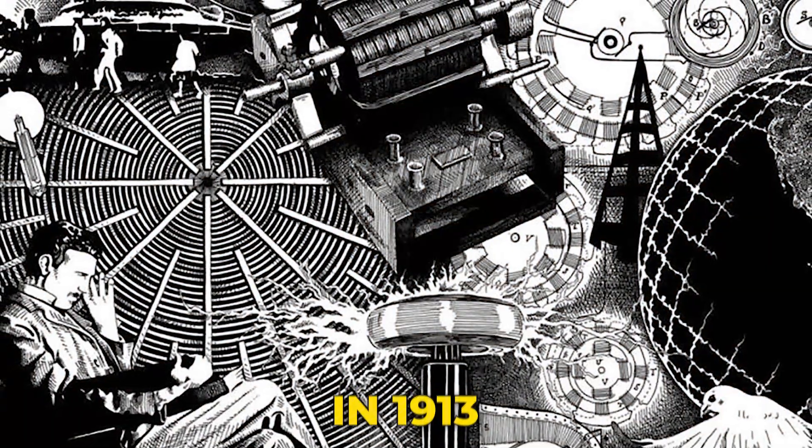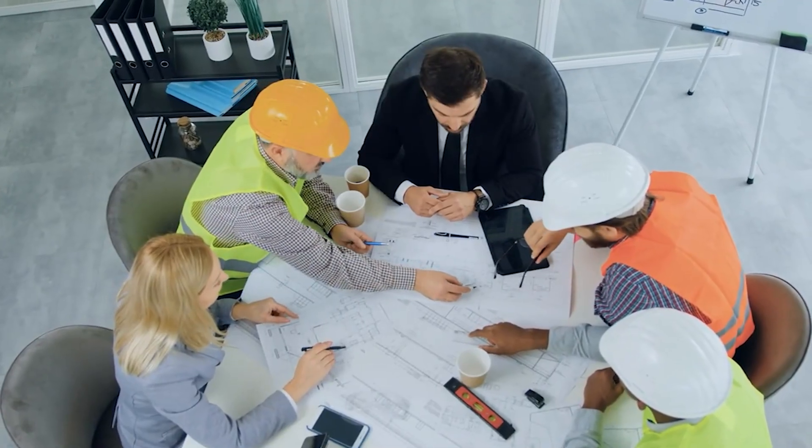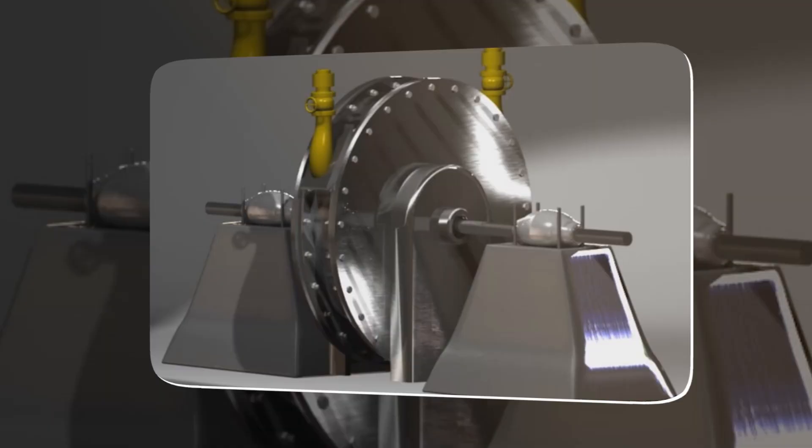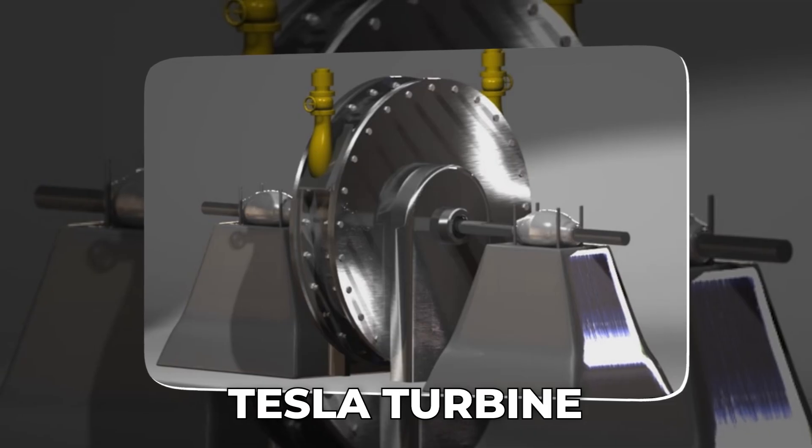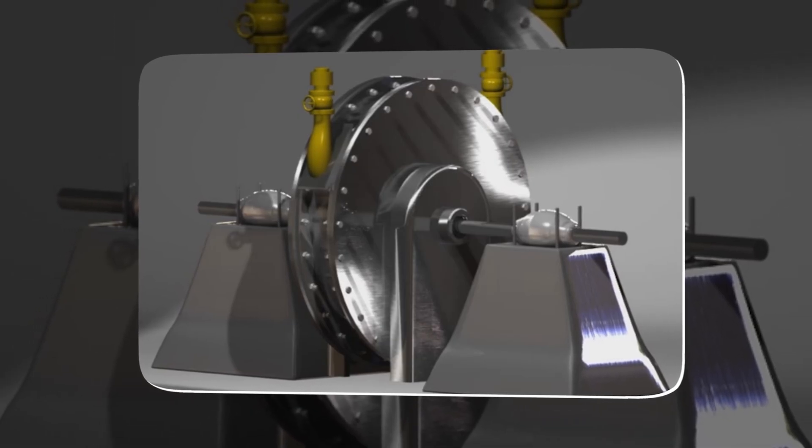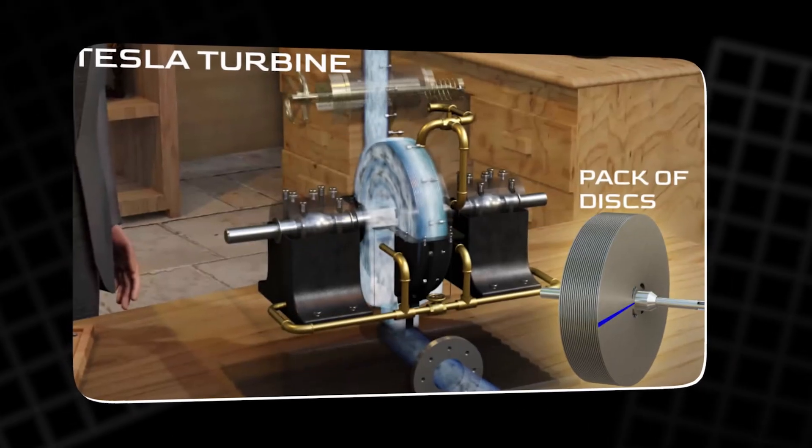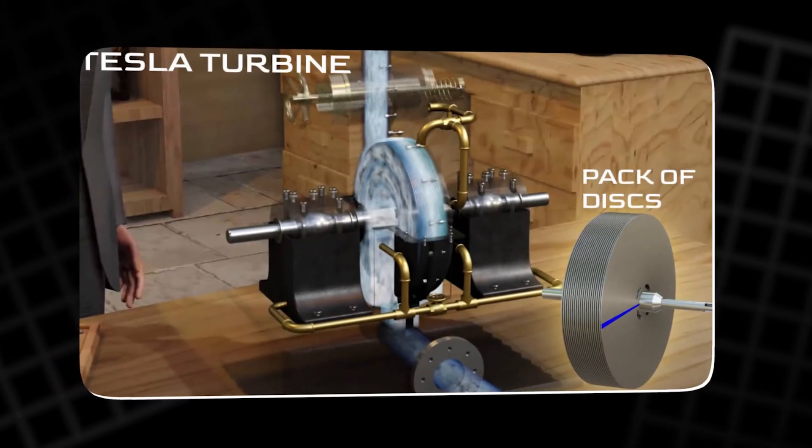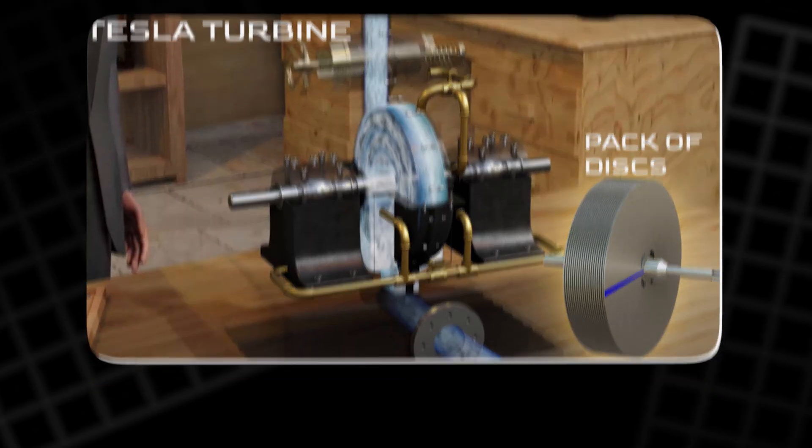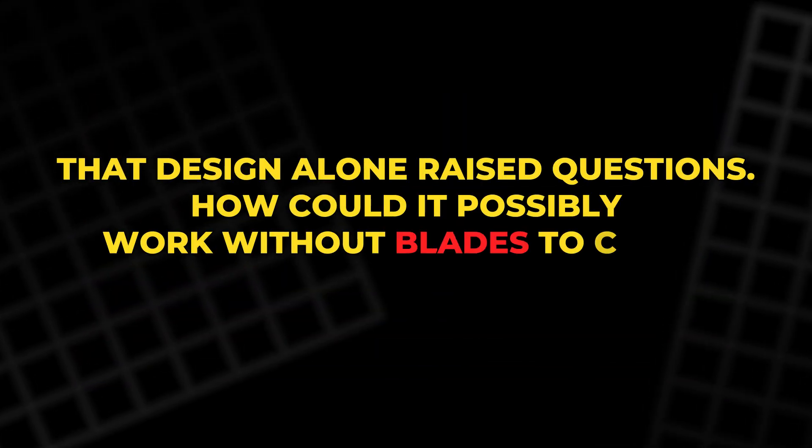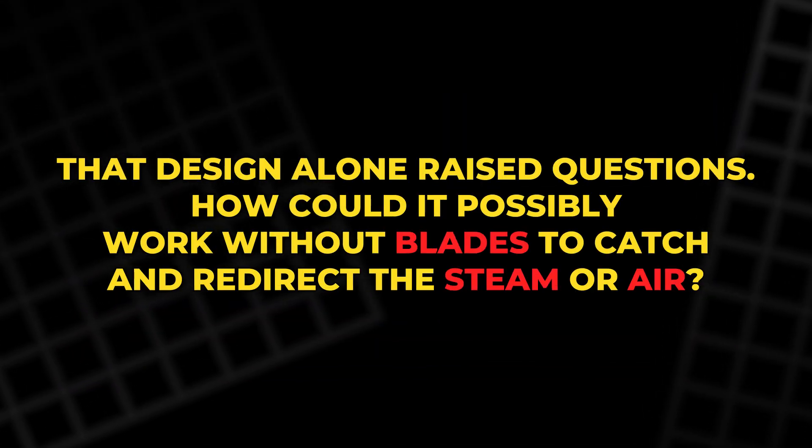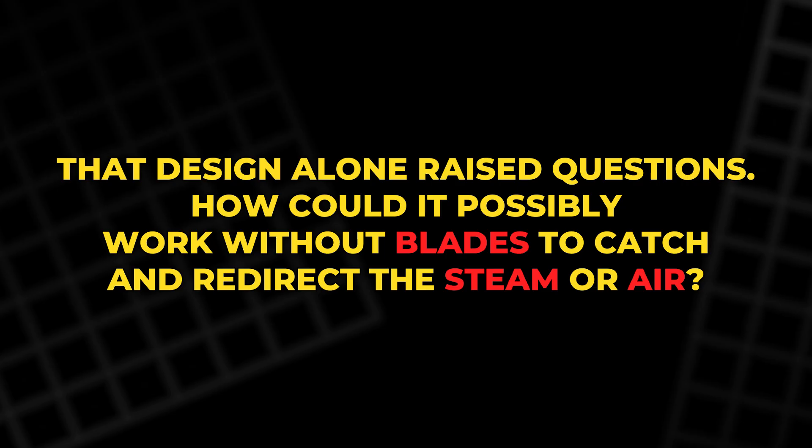In 1913, Tesla introduced a design so unusual that engineers are still fascinated by it more than a century later. It was called the Tesla turbine, and what made it different was the absence of blades. Instead, it was made up of a stack of smooth metal discs placed very close together inside a sealed casing. That design alone raised questions. How could it possibly work without blades to catch and redirect the steam or air?